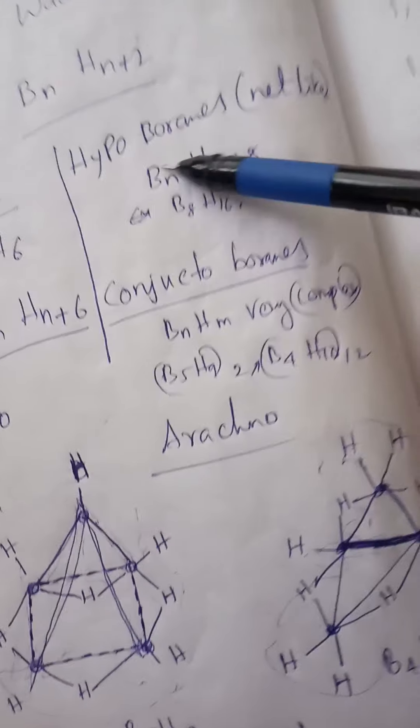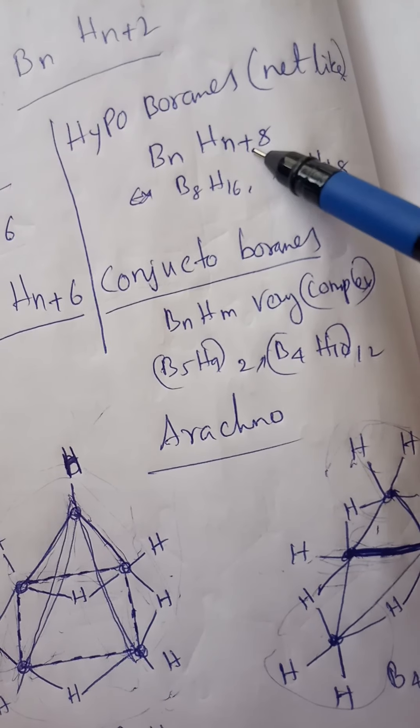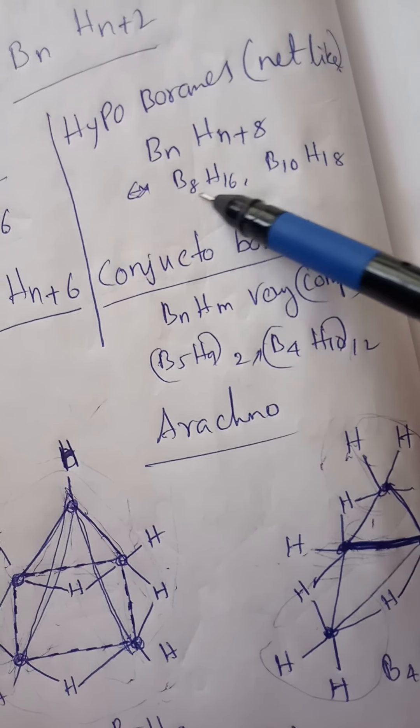The other one is hypho-boranes. Hypho-boranes are nest-like structures with the formula BnHn+8, for example B8H16.